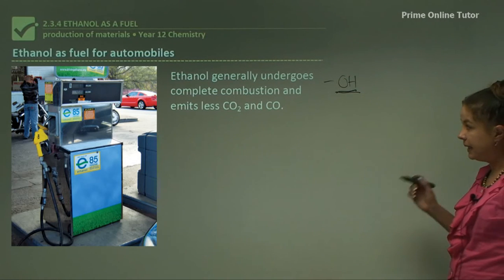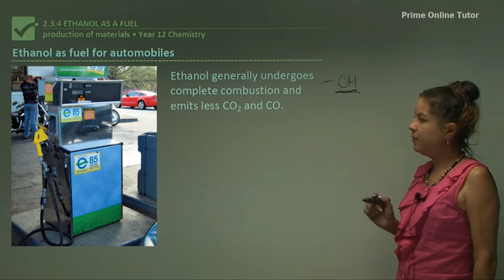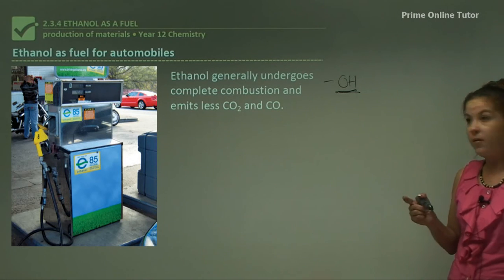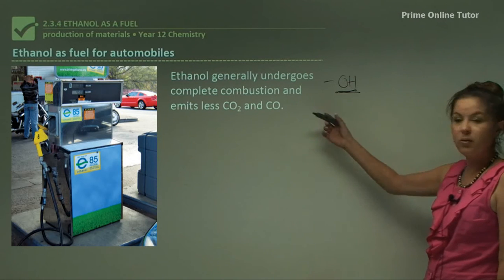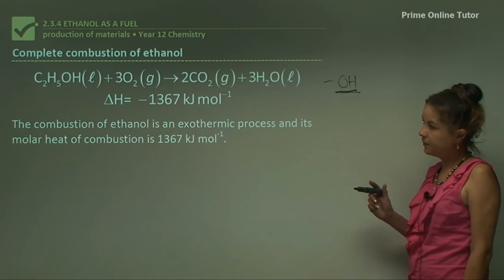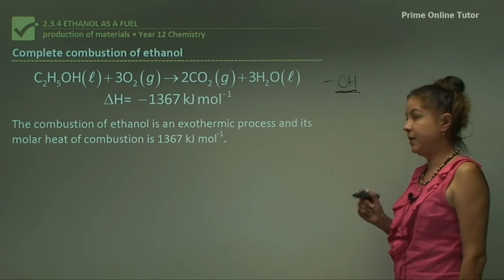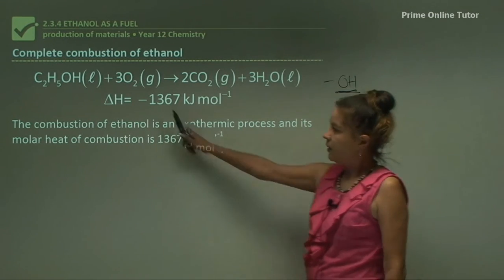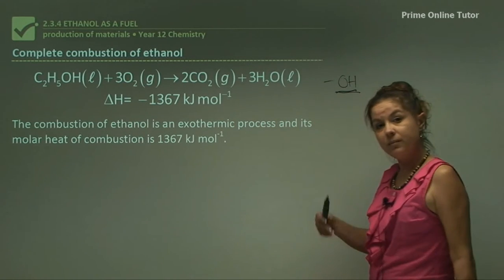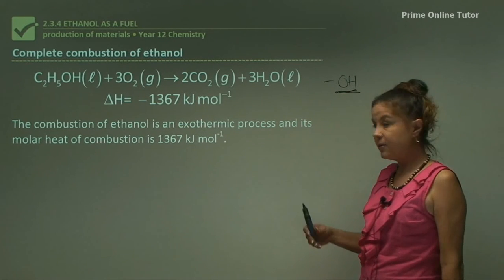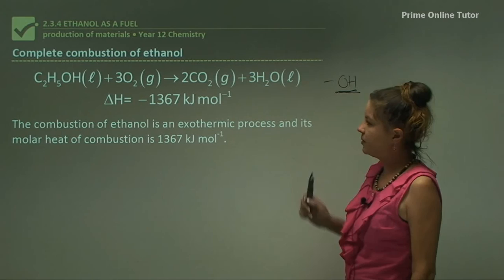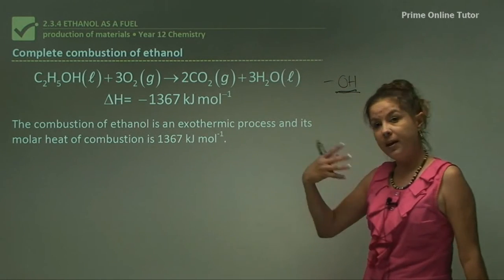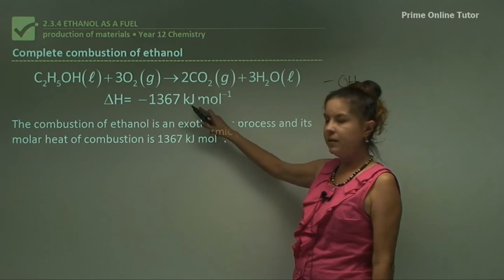Ethanol generally undergoes complete combustion in a car, emitting less carbon dioxide (CO2) and less carbon monoxide (CO), which is fantastic for the environment as both are greenhouse gases and poisonous to humans and animals. The equation for complete combustion of ethanol is: C2H5OH (l) + 3O2 (g) → 2CO2 (g) + 3H2O (l). The enthalpy change is −1,367 kilojoules per mole. The negative sign indicates it's an exothermic process — it gives out heat.